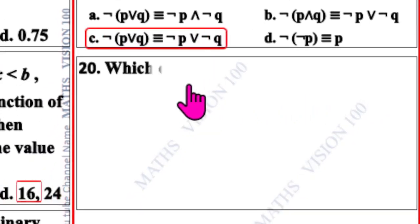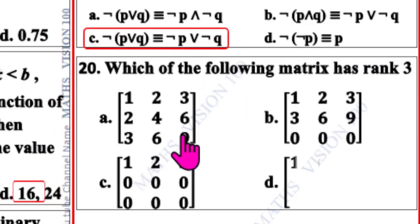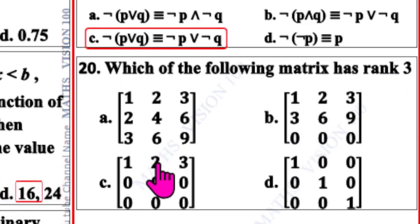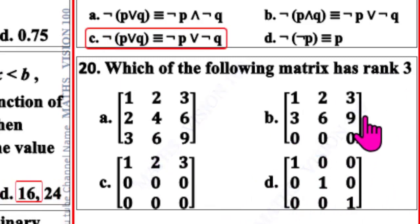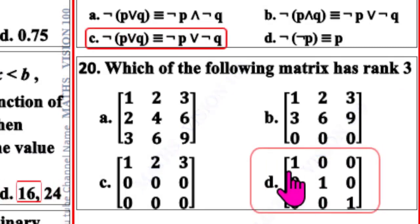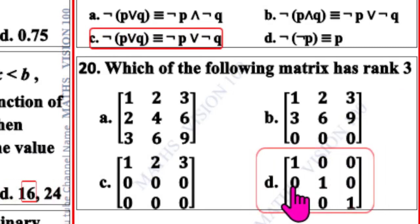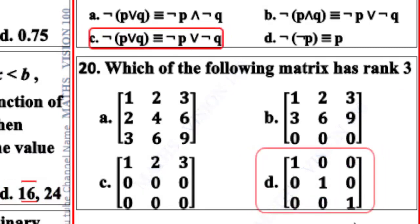Question number 20. Which one of the following matrices has rank 3? Four options are given. The unit matrix of order 3 has rank 3, therefore the correct option is D: the identity matrix [[1,0,0],[0,1,0],[0,0,1]].